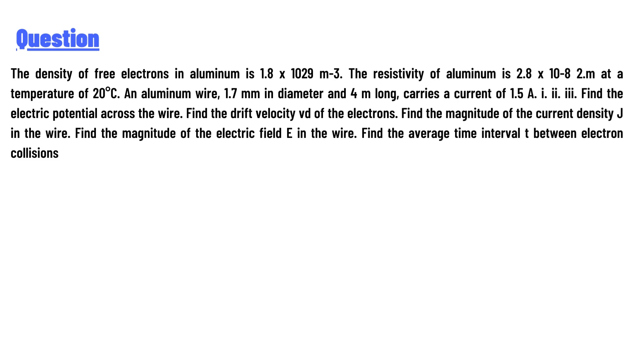The resistivity of aluminum is 2.8 × 10^-8 Ω·m at a temperature of 20°C. An aluminum wire 1.7 mm in diameter and 4 m long carries a current of 1.5 A.